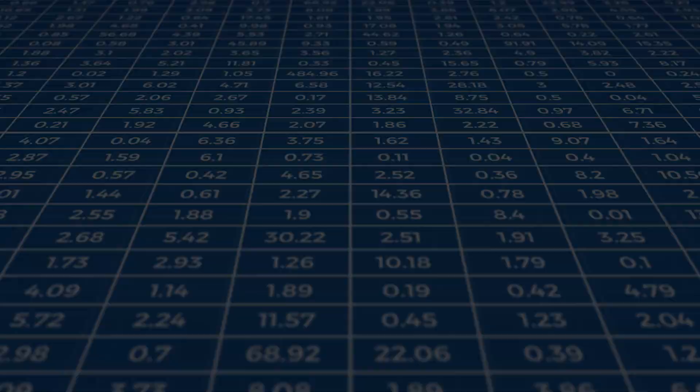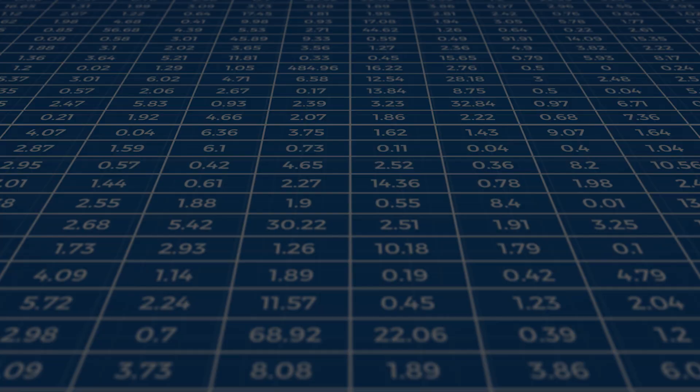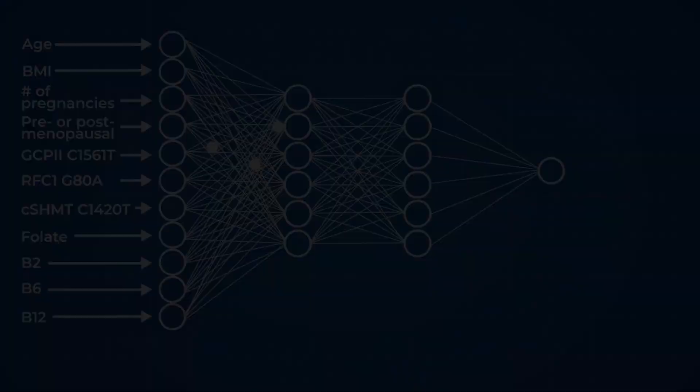At this point, you can present the network with an entirely new set of inputs, data from a new group of patients where you do not know whether or not they will develop cancer, and get a pretty accurate output prediction about how likely they are to.